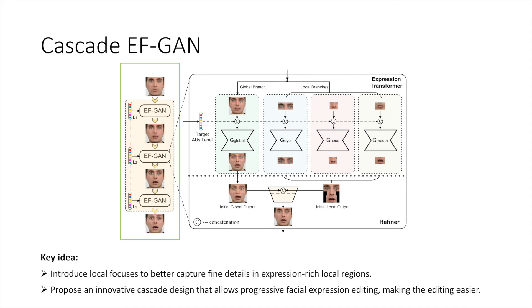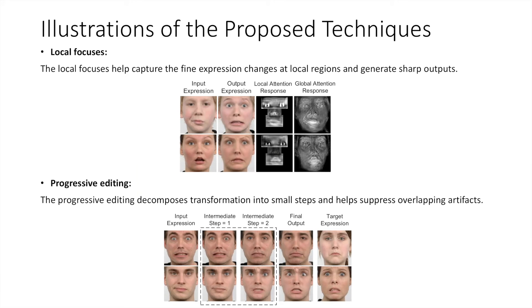In the Cascade EFGAN, the output from the previous EFGAN is fed to the ensuing one as input for further processing. Such a design allows progressive expression editing and makes the transformation easier. Here we show some illustrations of the proposed techniques. With the local focuses, the model could better capture the fine details around local regions, which could help suppress the incoherent artifacts and generate sharper outputs. With the progressive editing, the large-gap transformation could be decomposed into a few small steps, which makes the editing easier and suppresses the overlapping artifacts effectively.